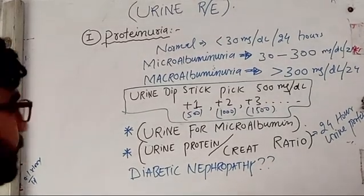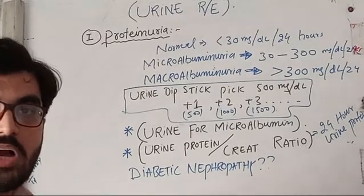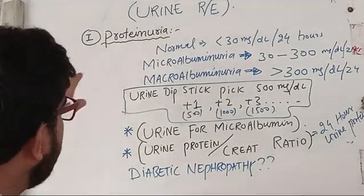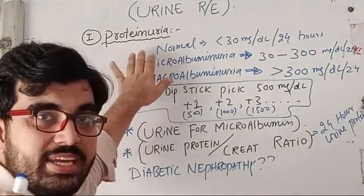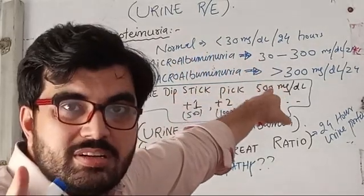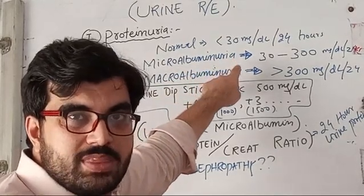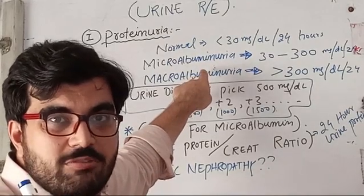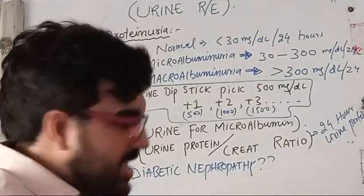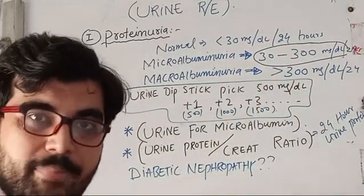Today I am going to talk about urine routine examination (URE). We can diagnose a lot of diseases just by looking at the urine. The first thing I would like to mention is proteinuria — protein in urine. The normal range of protein in urine is less than 30 mg per deciliter per 24 hours. Microalbuminuria means a smaller amount of protein: 30 to 300 milligrams per deciliter per 24 hours, and it is a precursor toward renal failure in cases of diabetic nephropathy.